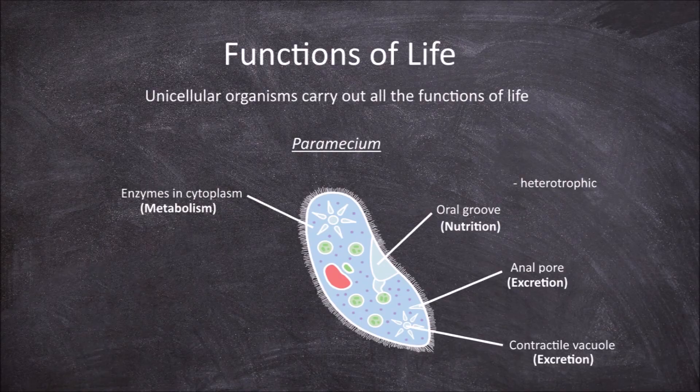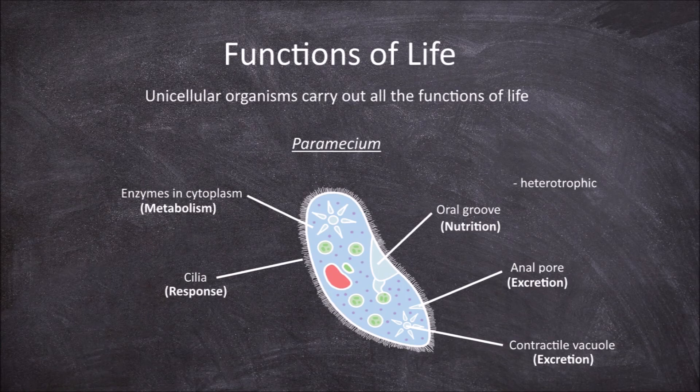Paramecium are covered in small hairs called cilia. These cilia allow them to move around in response to changes in the environment — this is an example of their responsiveness. Homeostasis in paramecium is maintained by the movement of materials through the cell membrane, such as the diffusion in and out of gases like oxygen and CO2, or to maintain water levels, excess fluid is removed via the cell membrane through vacuoles.